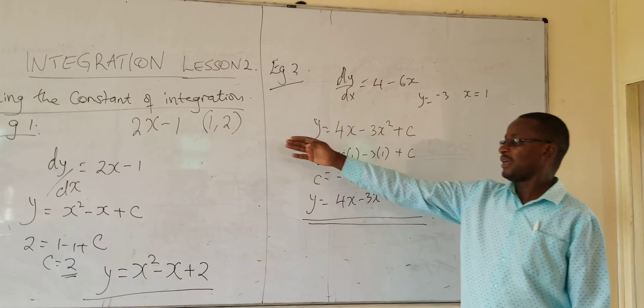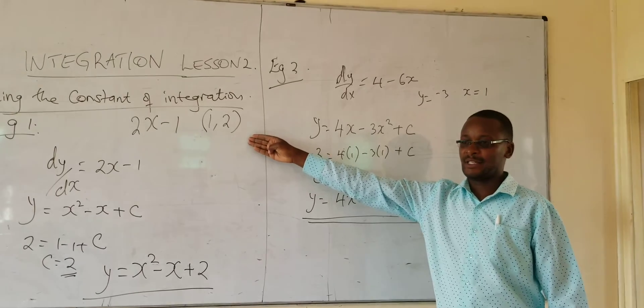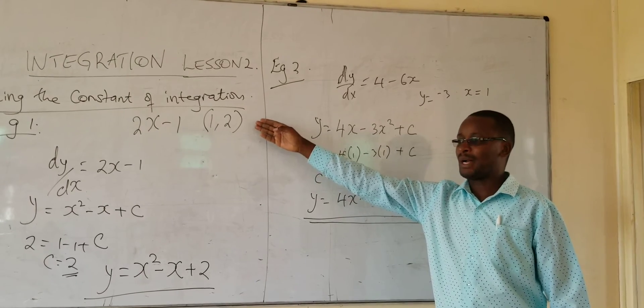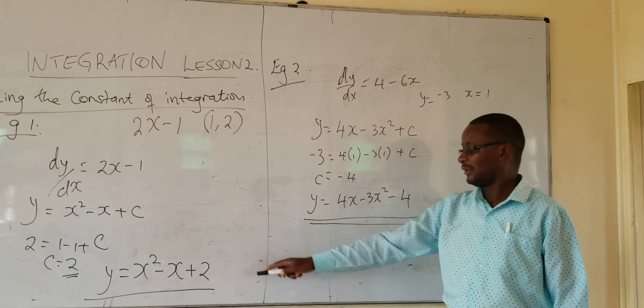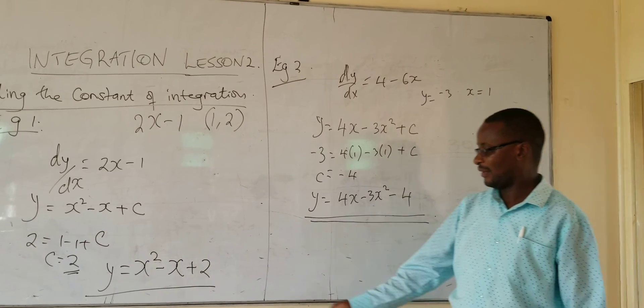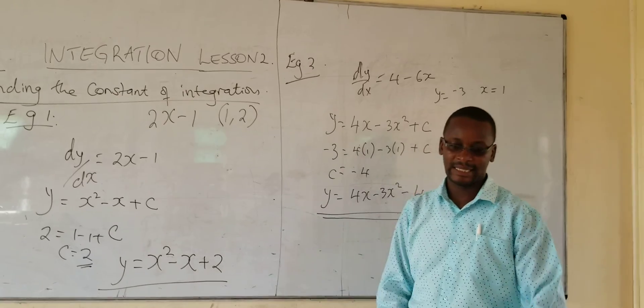So the moment you are given more information about the curve, especially the point or one point through which the curve passes, you can get the equation of that particular curve and you can be able to get the arbitrary constant C.